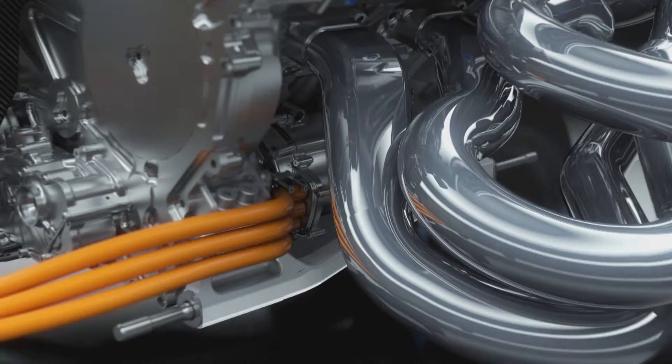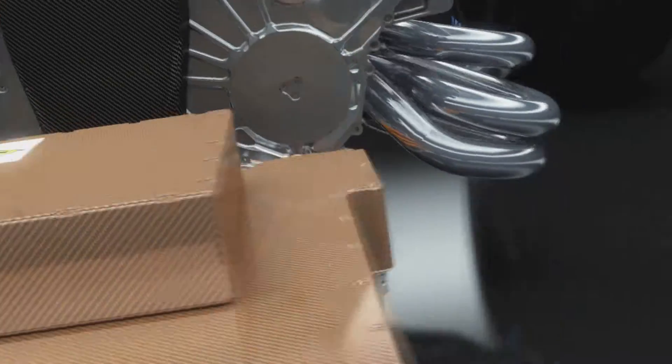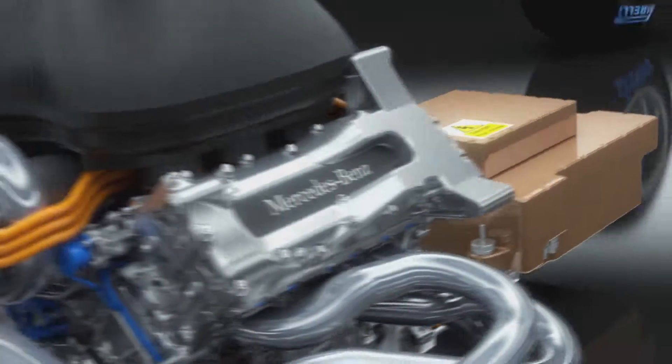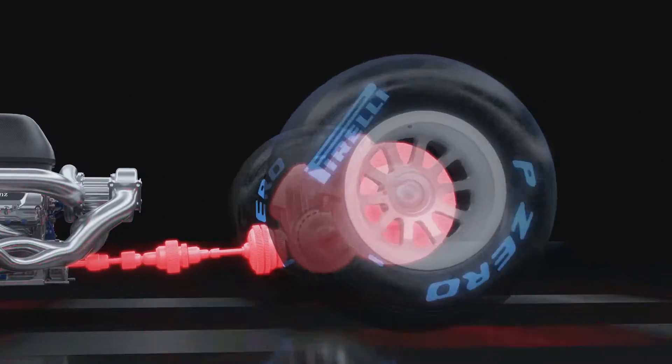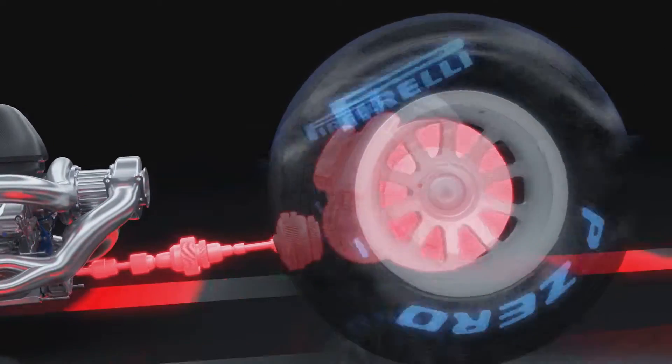Connected to the braking system and acting as a generator, the MGU-K can feed so much energy into the battery every lap that you could talk for 370 hours on your BlackBerry smartphone.